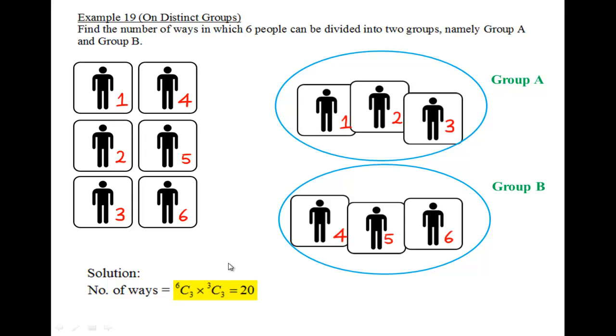So we have 6 choose 3 to form Group A, and subsequently the remaining three, I will choose another three of them. So 3 choose 3, giving me 20.